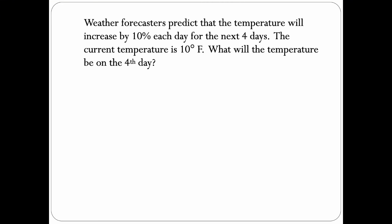Weather forecasters predict that the temperature will increase by 10% each day for the next four days. The current temperature is 10 degrees Fahrenheit. What will the temperature be on the fourth day? This is a geometric sequence. The first day is 10 degrees, so a_1 is 10.